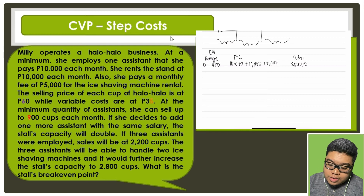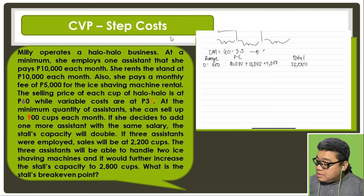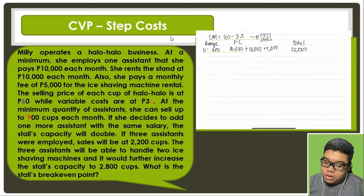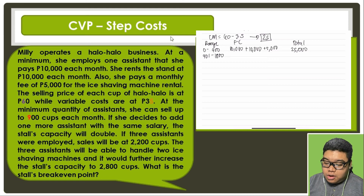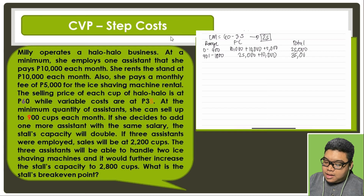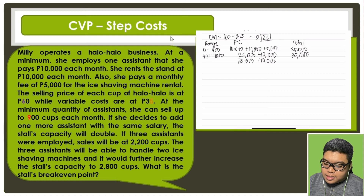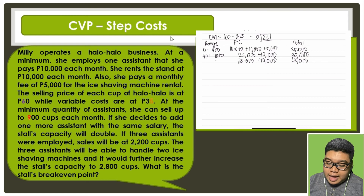For the second range, if she adds one more assistant, capacity doubles to 901 to 1,800 units. Fixed costs become $25,000 plus $10,000, totaling $35,000. For the third range, if three assistants are employed, that is $35,000 plus $10,000, giving $45,000, with a capacity range of 1,801 to 2,200 cups. Adding a second ice shaving machine brings fixed costs to $45,000 plus $5,000, which is $50,000, covering capacity up to 2,800 cups.